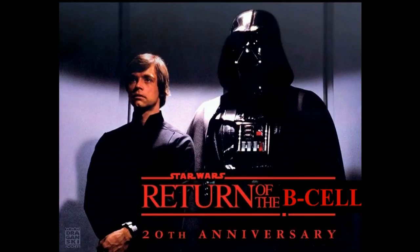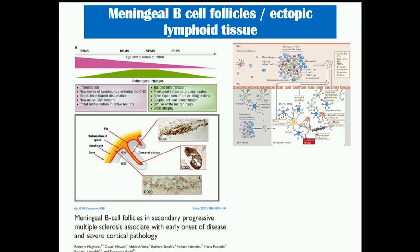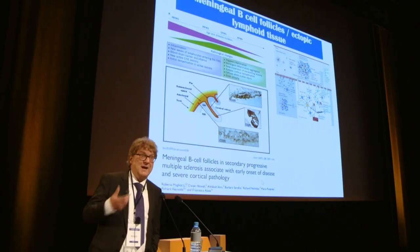Over the past 25 years, the return of the B cell has been notable. The Rome group provided pathological observations of collections of B cells, giving rise to the concept of a compartmentalized immune response that takes precedence as the disease advances from relapsing to progressive stages — a concept championed by Professor Lassmann.